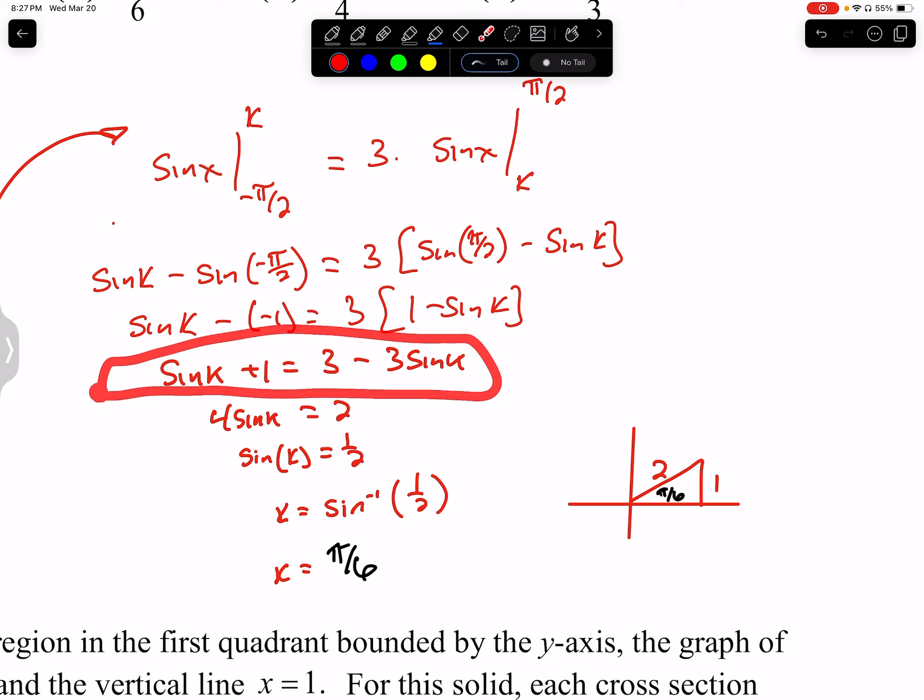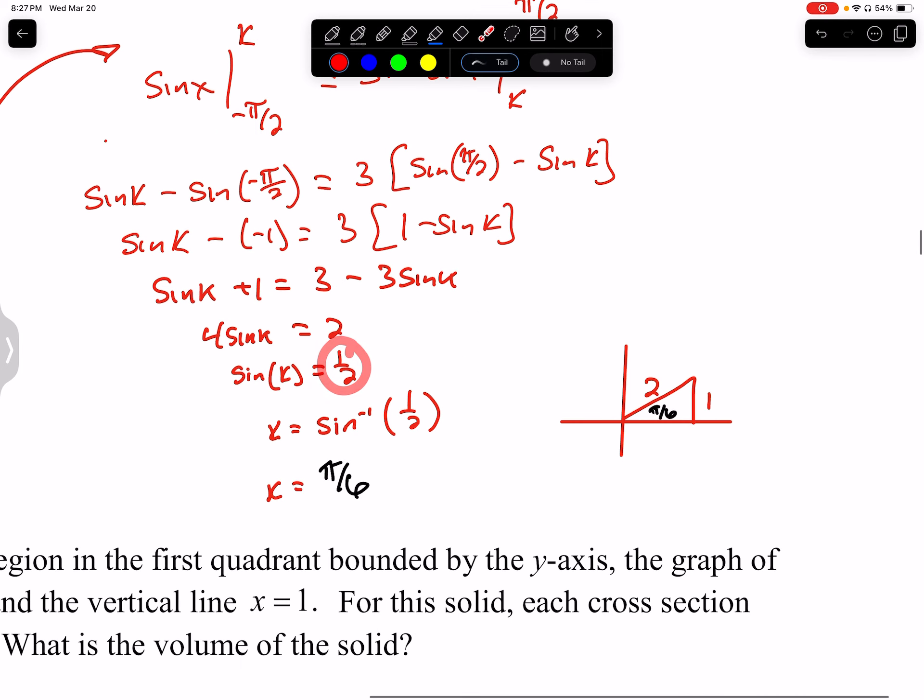Trying to get sine of k's all together. So if I add 3 sine of k to both sides, I get 4 sine of k. If I subtract 1 from both sides, I get 2 over here. I'm trying to get sine of k by itself. Divide both sides by 4. 2 over 4 reduces to 1 half. To get k by itself, do sine inverse to both sides. And I get k is sine inverse of 1 half.